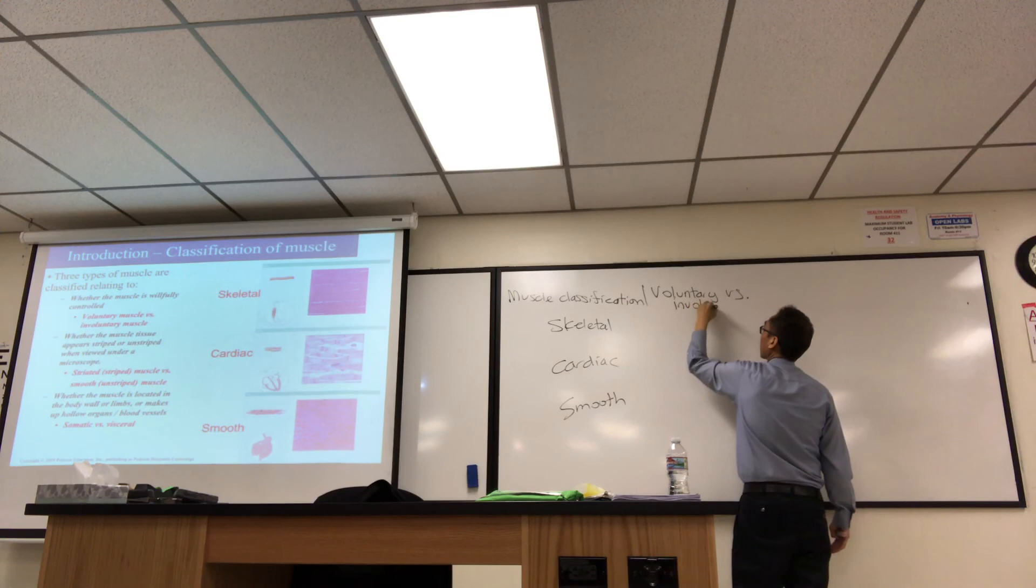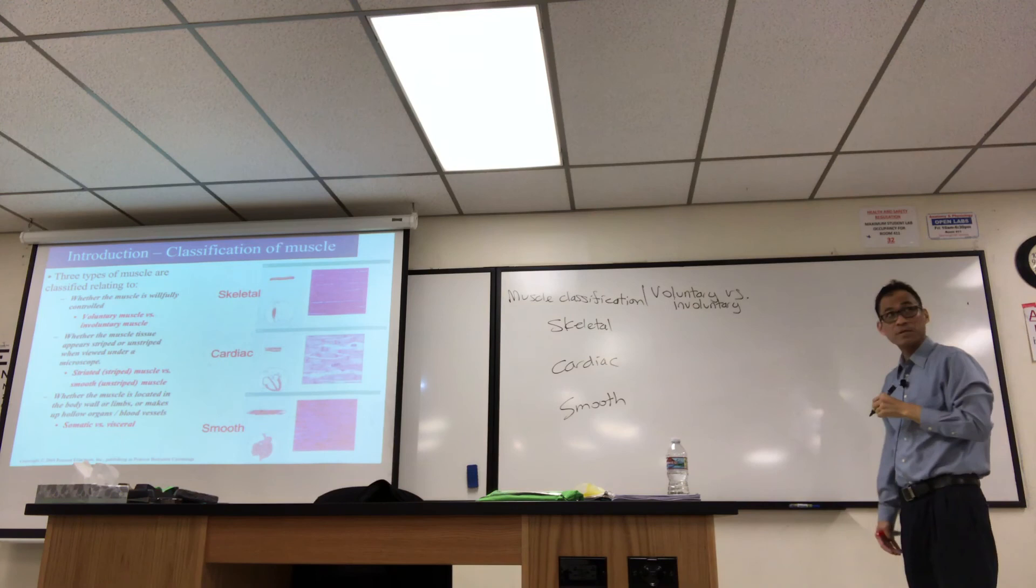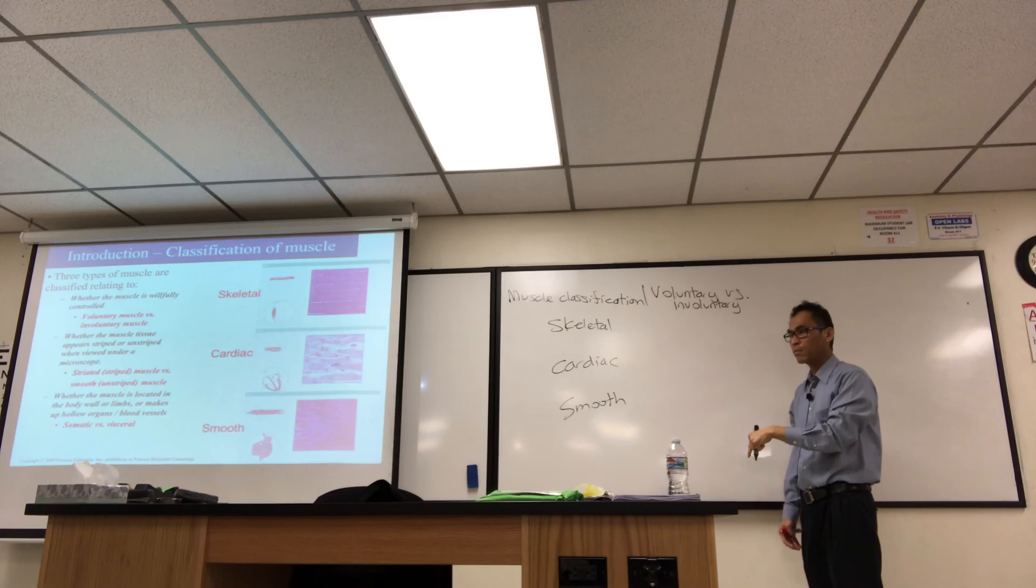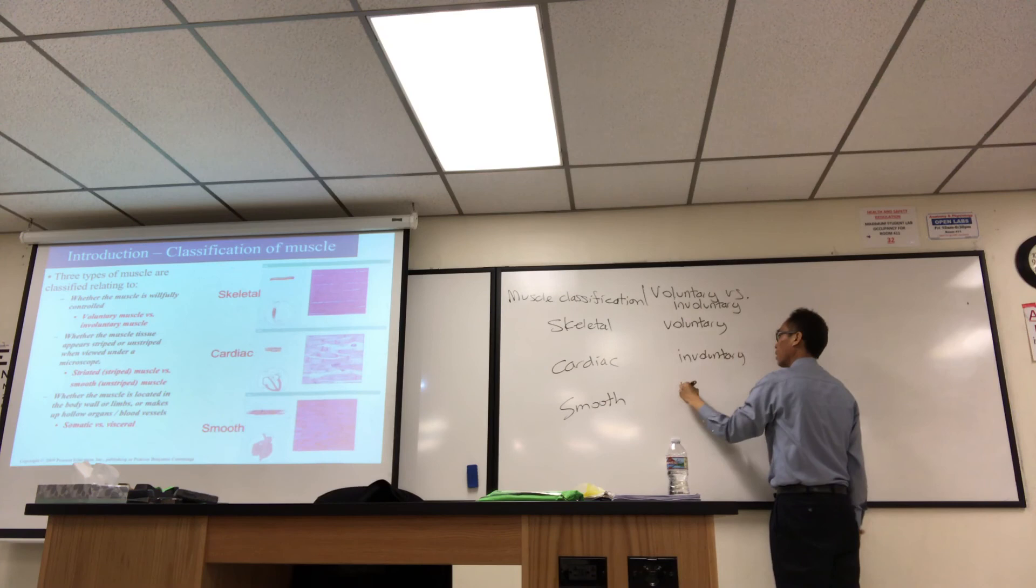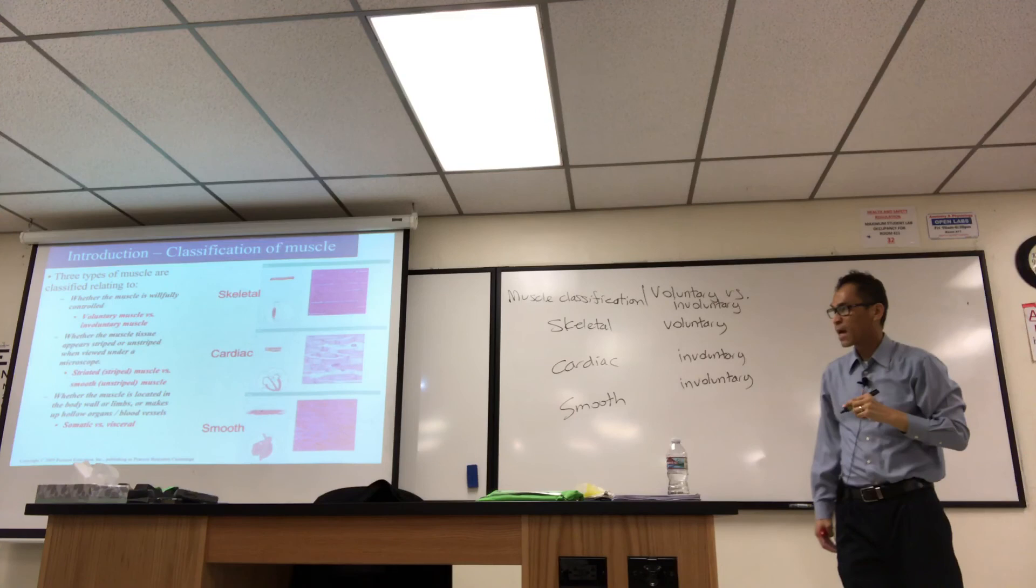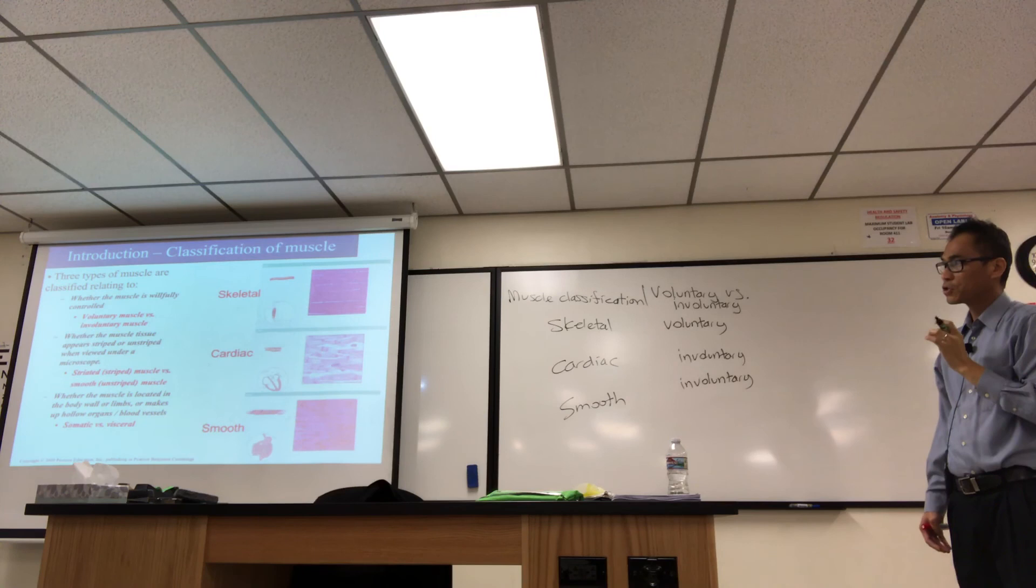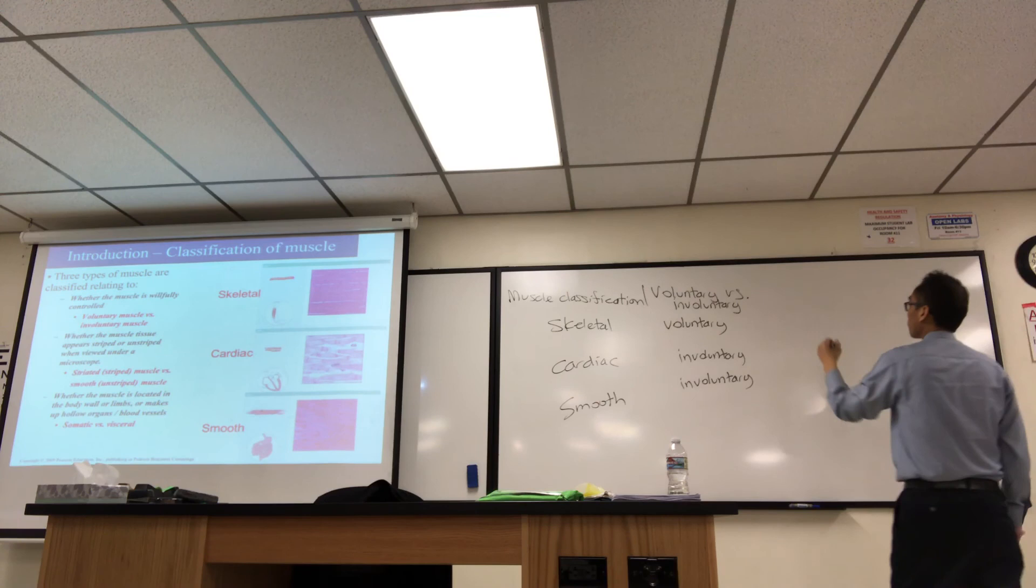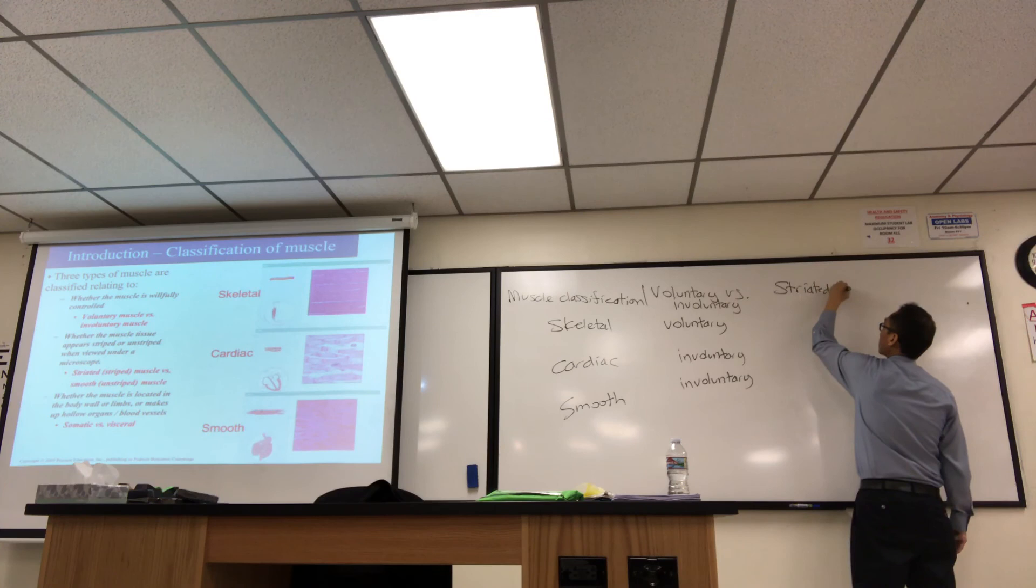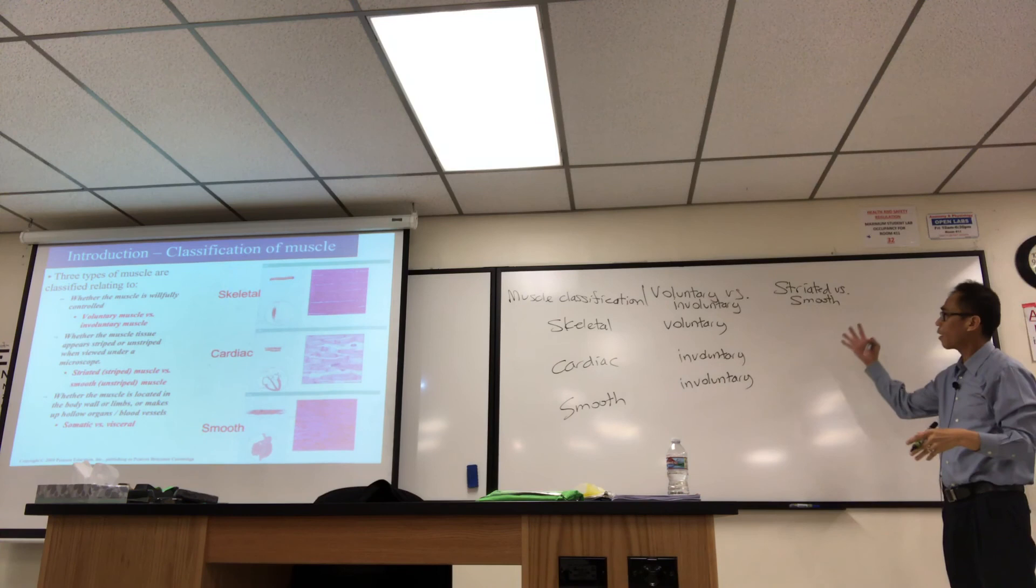In fact, the picture I just showed you pertains only to one of these, the top one, the motor neuron stimulating the muscle fiber. That's skeletal muscle. I'll just put skeletal, cardiac, smooth. One way you can classify these three muscle classes is whether the muscle is willfully controlled. So we call that like voluntary versus involuntary muscle. It's one way you can classify. Skeletal muscle is voluntary muscle, controlled by conscious thought. If you want to wiggle your toe, you can. The other two are involuntary.